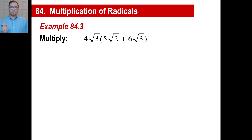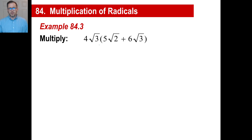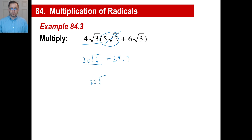Now let's look at a distribution problem. If this were 4x times (5y + 6z), you could do it — you just distribute. So 4√3 times (5√2 + 6√3): first, 4 times 5 is 20, and √3 times √2 is √6, giving 20√6. Then 4 times 6 is 24, and √3 times √3 is √9, which is just 3. So 24 times 3 is 72. The final answer is 20√6 + 72.